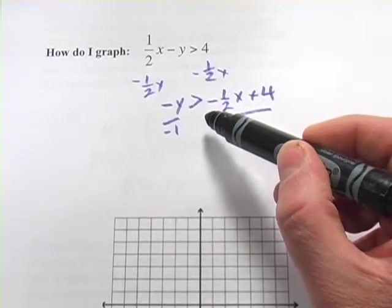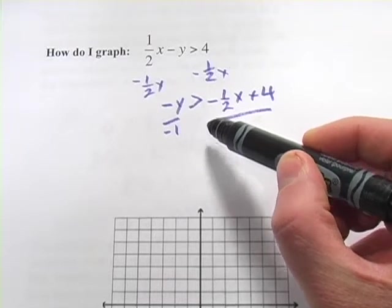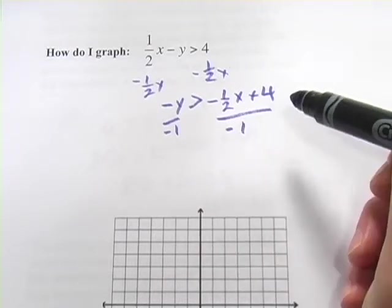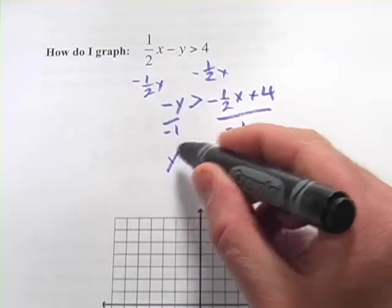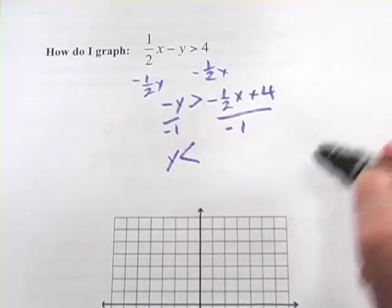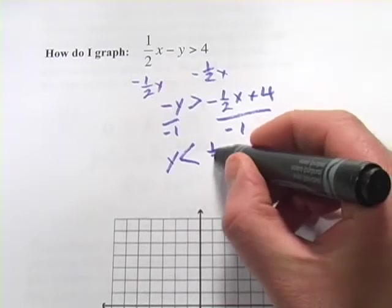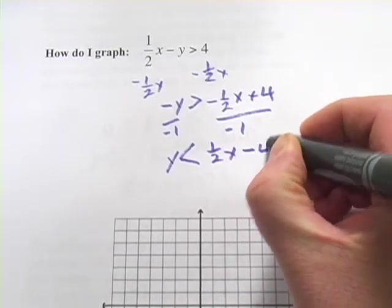But when you're dealing with inequalities, there's a special rule here. Whenever you multiply or divide by a negative number, you've got to flip that sign as well. So, this becomes y is less than, instead of greater than, positive 1 half x minus 4.